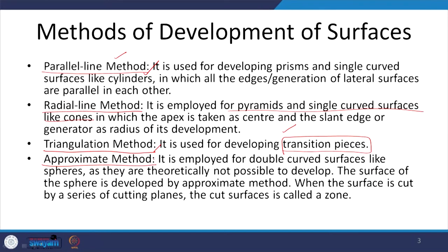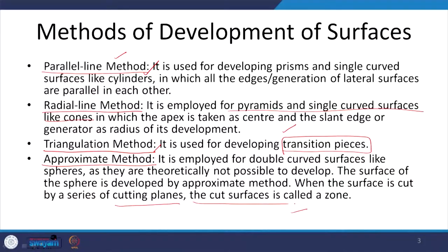The last method is the approximate method, used to generate the surface for a double curve surface. Single curve surfaces are like cylinders and cones; double curve surfaces are mainly spheres and different parts of spheres. It is very difficult to generate the exact surface of a sphere — as you must have seen in globes, we actually have these smaller pieces which are all approximated. Each part of the sphere's surface is assumed to be cut in a series of cutting planes, and each cut surface is called a zone.